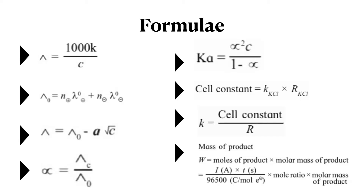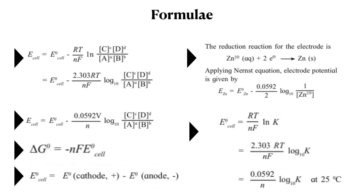One more thing about the second formula — it comes from Kohlrausch's law of independent migration of ions. So whenever you write that equation, you have to write it according to Kohlrausch's law. Next formula is the Nernst equation: E-cell equals E-naught-cell minus RT upon NF, ln of concentration of products upon concentration of reactants.